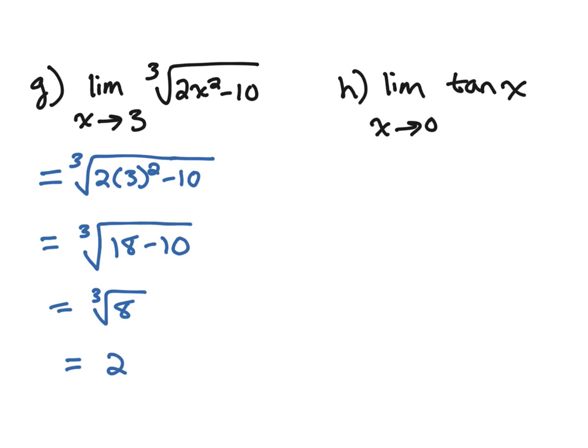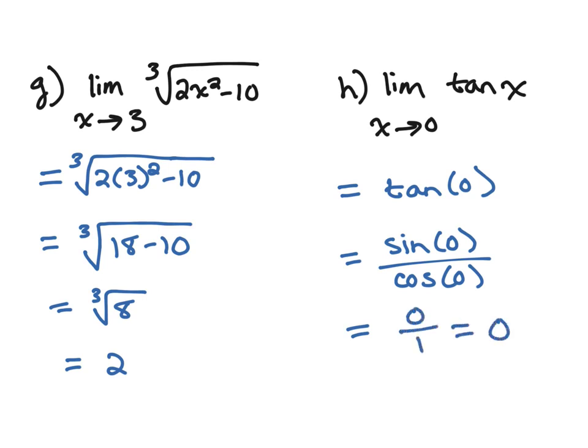Problem H, we're going to substitute the 0 in to tangent. So we get tangent of 0. Well remember, tangent is sine over cosine. At 0, sine is equal to 0 cosine is equal to 1, so we just get 0.